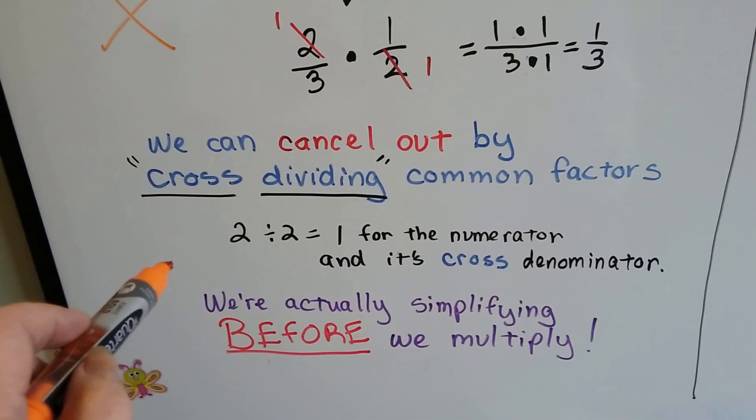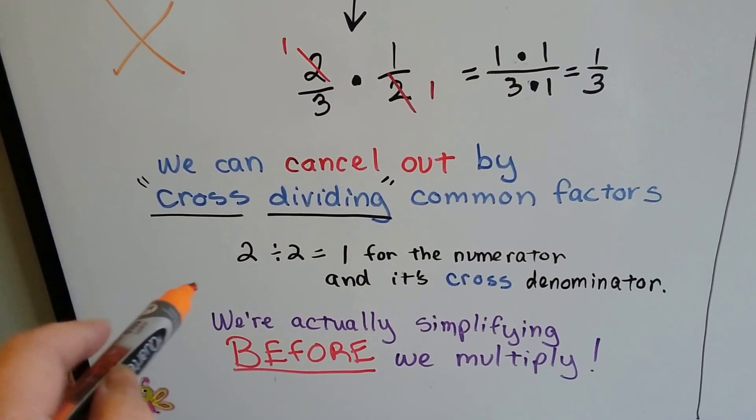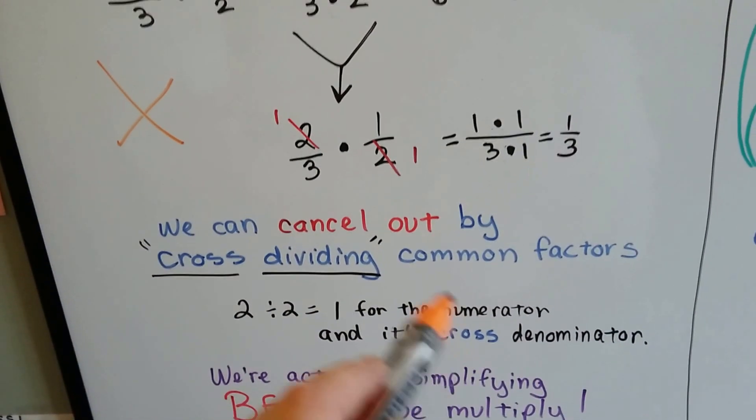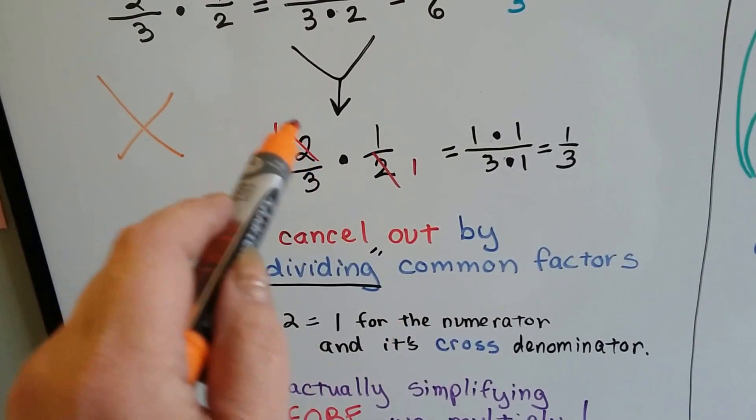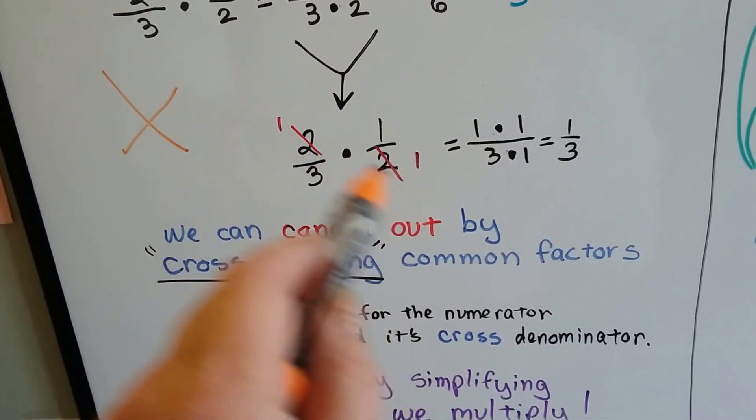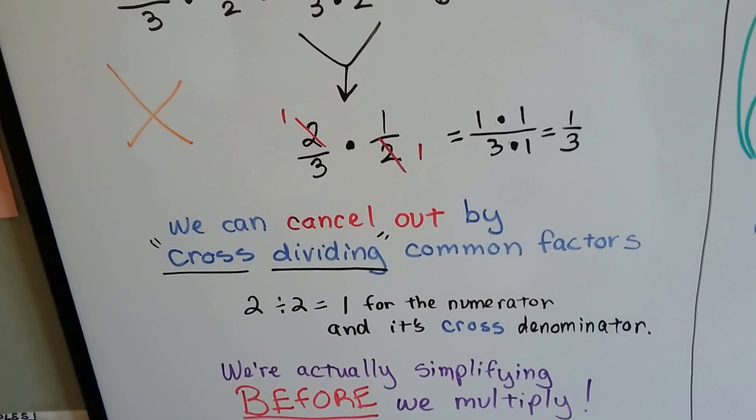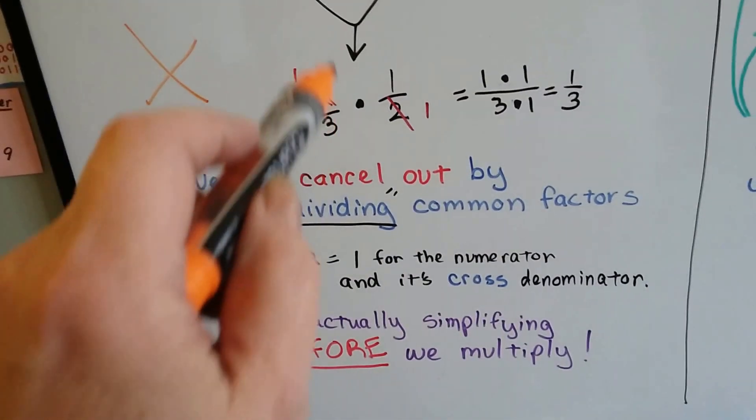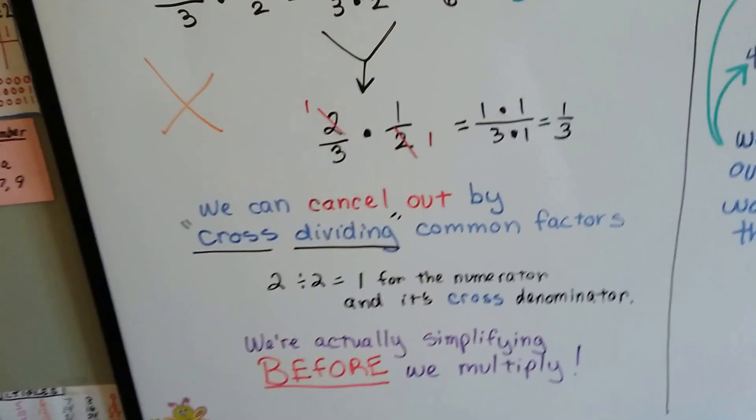By canceling out and doing it this way, we've eliminated this step of having to reduce to lowest terms. The answer comes out in its lowest terms. We're actually simplifying before we multiply. We are reducing it to lowest terms before we even multiply.